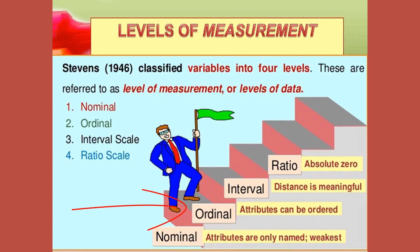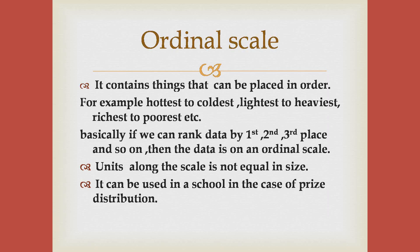The ordinal scale is the second level of measurement that reports the ranking and ordering of the data without actually establishing the degree of variation between them. Ordinal level of measurement is the second of the four measurement scales as you can see in the figure. Ordinal data is quantitative data which has naturally occurring orders and the difference between values is unknown. It can be named, grouped, and also ranked.